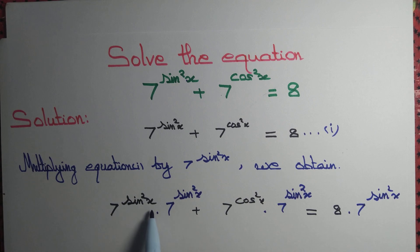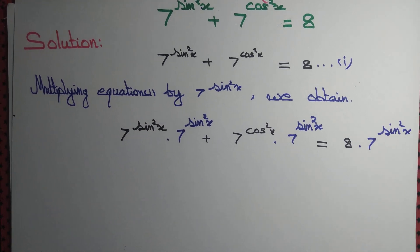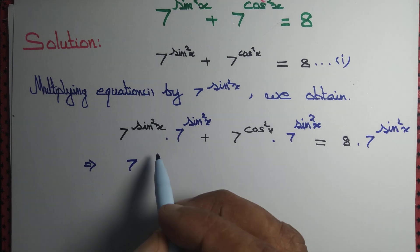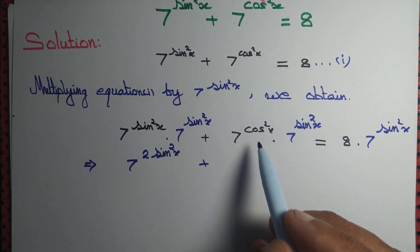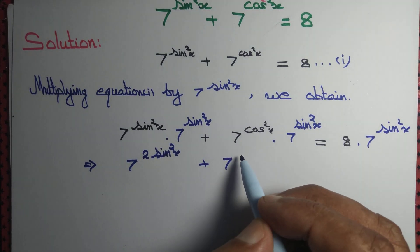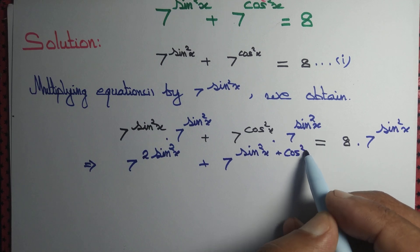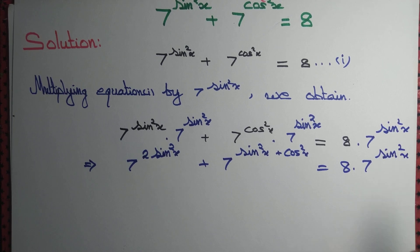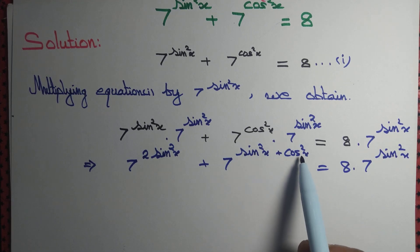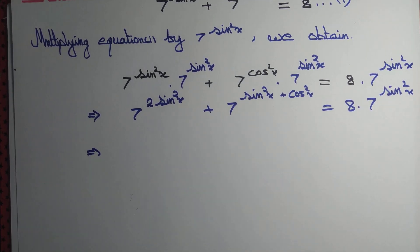Now the bases are the same, so we can add the powers. Sine square plus sine square gives us two times sine square x, so we get 7 to the power 2 times sine square x. Then adding sine square x plus cos square x in the next term, and by trigonometry we know that sine square x plus cos square x is exactly equal to 1, so we replace that by 1.